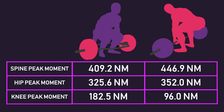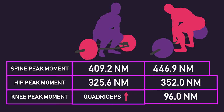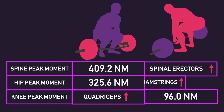Peak spinal flexor moments were greater for the conventional deadlift. Peak hip flexion moments were also greater for the conventional deadlift. But peak knee flexion moments were greater for the trap bar deadlift. The greater peak knee flexion moment with the trap bar deadlift implies it involves the quadriceps more than the conventional deadlift. The greater peak spinal flexion moment for the conventional deadlift implies that it involves the spinal erectors more, and similarly the greater peak hip flexion moment implies greater glute and hamstring involvement compared to the trap bar deadlift.